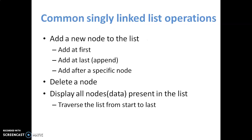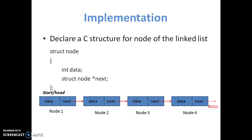Now these are a few common singly linked list operations for which we are going to discuss the pseudocode. First is adding a new node to the list — there are different ways: we can add it at the first position, at the last position (append it), or after a specific node. Then we can delete a node, and we can display all nodes, which is nothing but traversal of the list from start to end. Now we will move to the implementation of singly linked list and the different operations that can be performed on it.